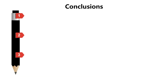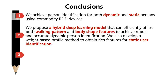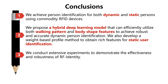To conclude, this work achieves person identification for both dynamic and static persons using commodity RFID devices. We propose a set of schemes to identify dynamic and static users, and conduct extensive experiments to demonstrate the effectiveness and robustness of RF-Identity. Thanks a lot for your listening.